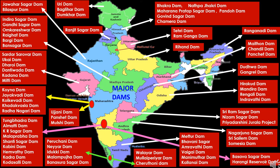Now to study major dams of India. We will go through a state-wise study. In Jammu and Kashmir, the first dam is Uri Dam, constructed across the Jhelum River in Uri, Baramulla district, located near the Line of Control on the India-Pakistan border. Second is Baglihar Dam, built on the Chenab River in Ramban district. Third is Dumkhar Dam, constructed on the Indus River in Leh district.